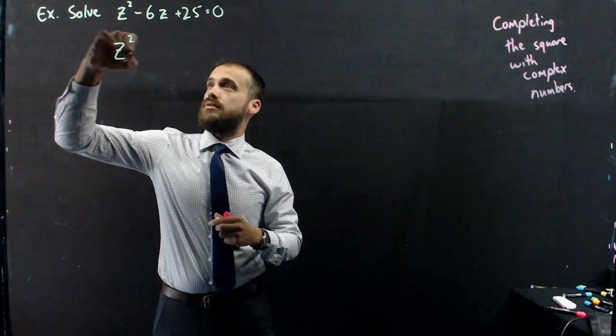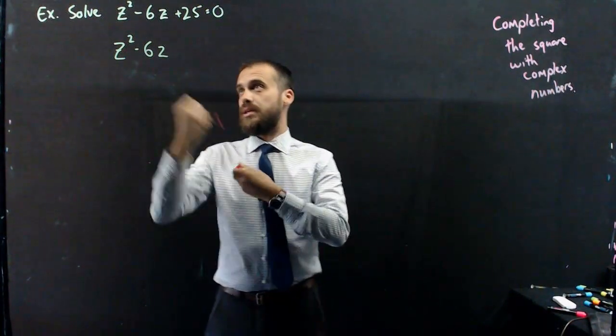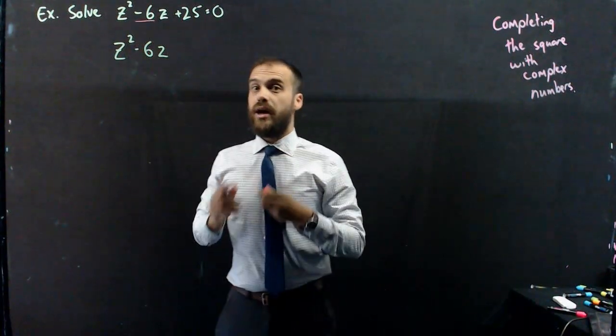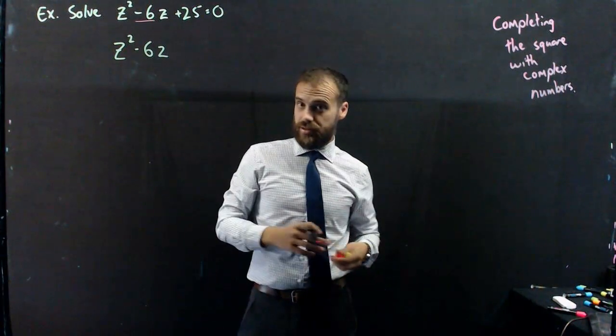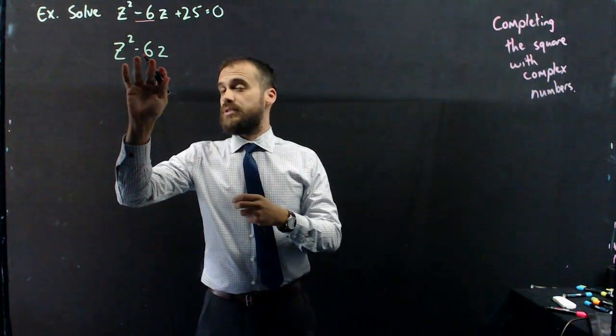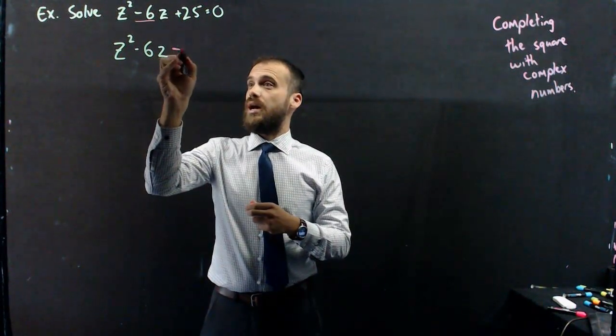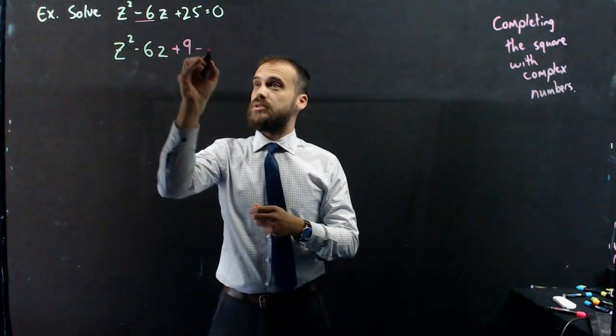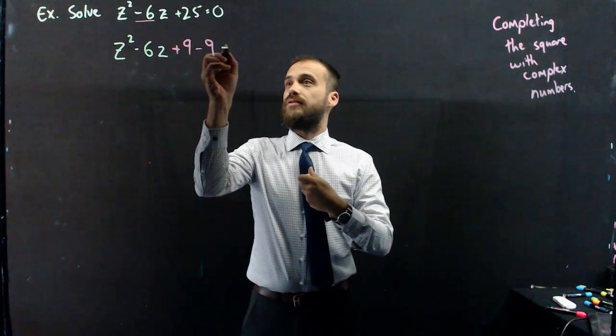To complete the square, it's a pretty straightforward process. z squared minus 6z. Now I take this number here, I halve it, and I square it, and then I add and subtract it. Half, square, add, subtract. Halving negative 6 is negative 3. Squaring that is positive 9. So I'm going to add 9, and I'm going to subtract 9. And then that positive 25 can stay there.